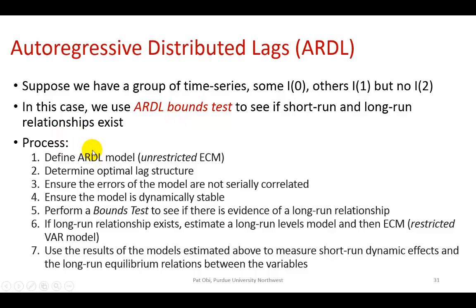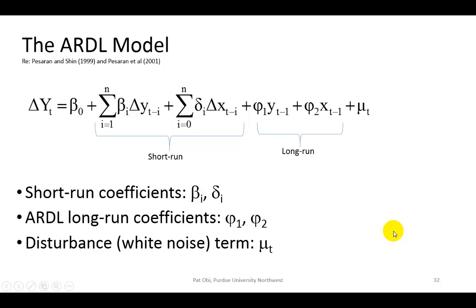I've summarized the process here. We're going to begin by defining the ARDL model, then determine the optimal lag structure and ensure the errors of the model are serially uncorrelated, as well as ensure that the model itself is dynamically stable. Having verified those, we then proceed and perform the bounds test. And if a long-run relationship exists, we can estimate the long-run levels model, obtain the residuals, and then estimate the error correction model.